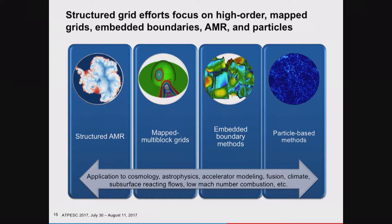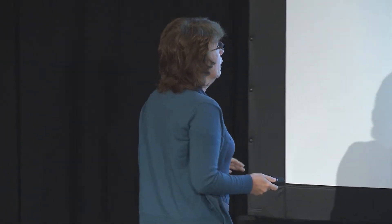Thinking about block-structured AMR: I'm going to give a preview for what Ann will talk about next. You can think about using adaptive mesh refinement. Adaptive mesh refinement for structured grids has been around since the 80s and is a very nice way to focus the computation exactly where you need it. If you've got some phenomenon happening on a smaller scale, you can put a lot more grid points in that area, refining the computation down to where you need it—that's called structured adaptive mesh refinement.